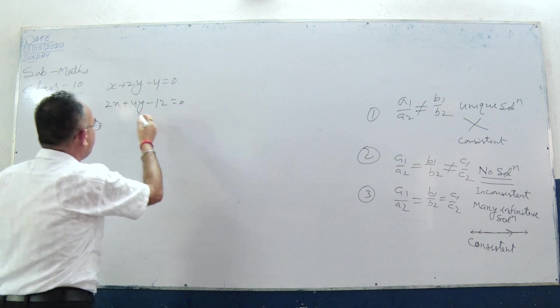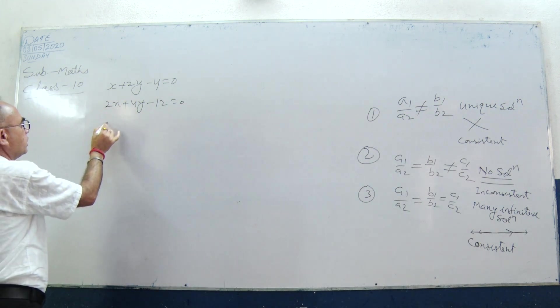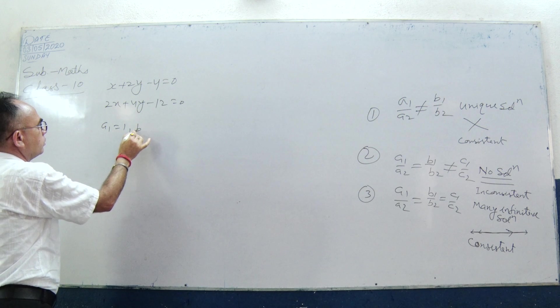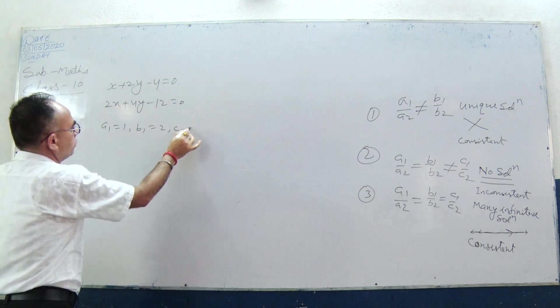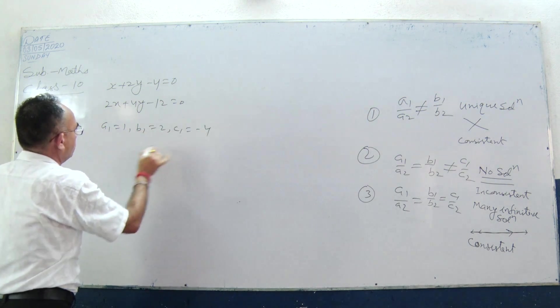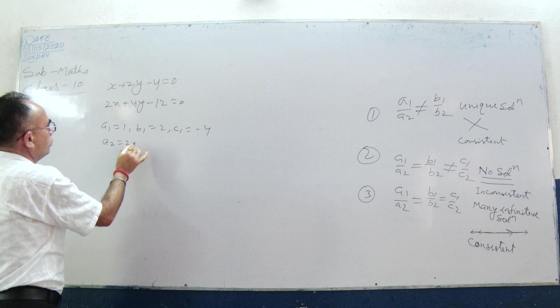Now let's identify the coefficients. A1 equal to 1, B1 equal to 2, and C1 equal to negative 4. A2 equal to 2.